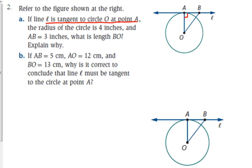Then they tell us that the radius of the circle is 4 inches. Which segment is the radius? OA is the radius. So we put 4 right there. And then they tell us that AB is 3 inches.